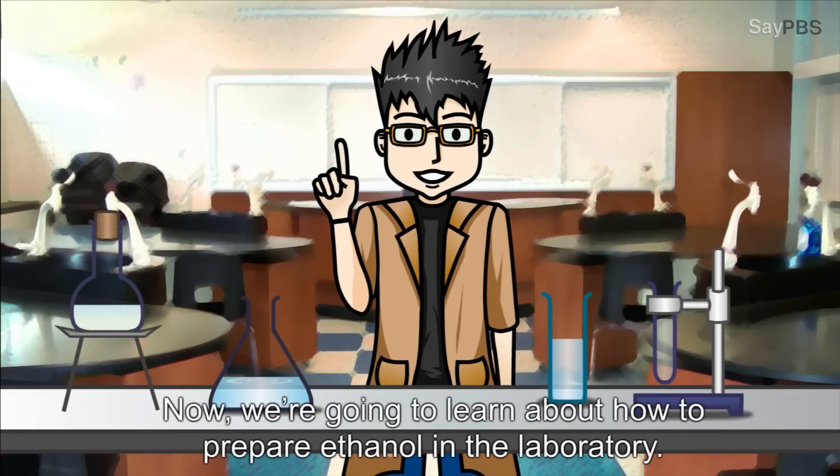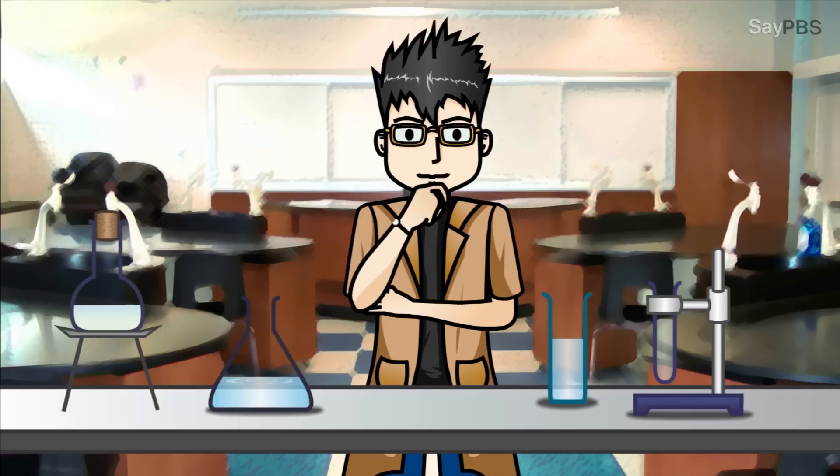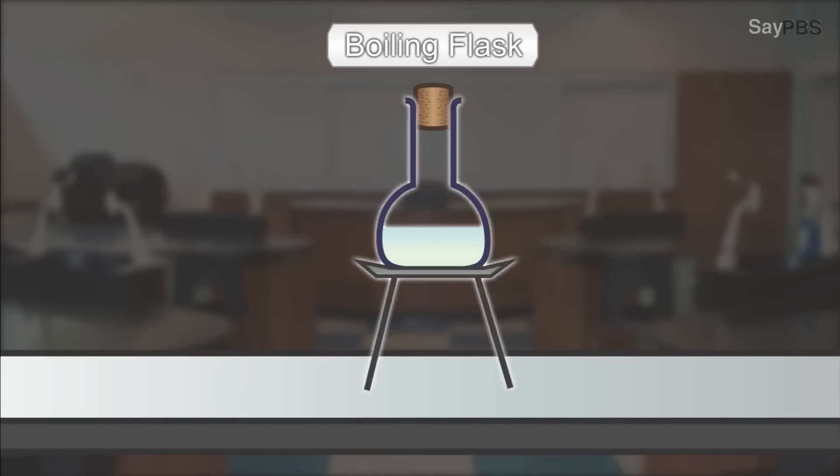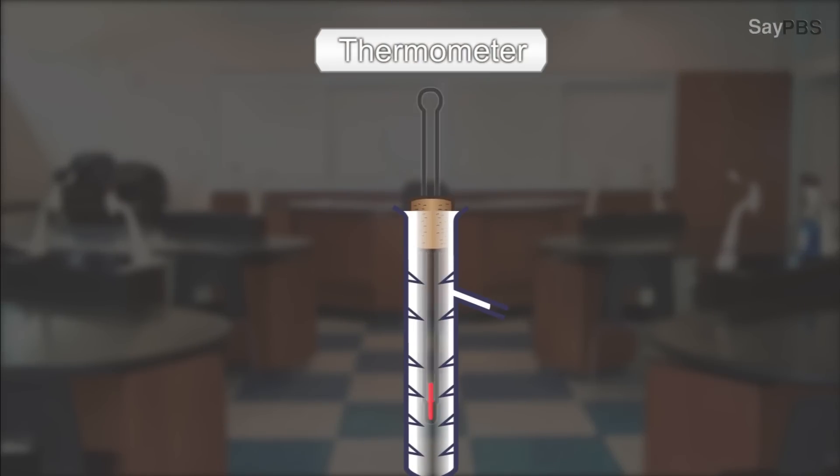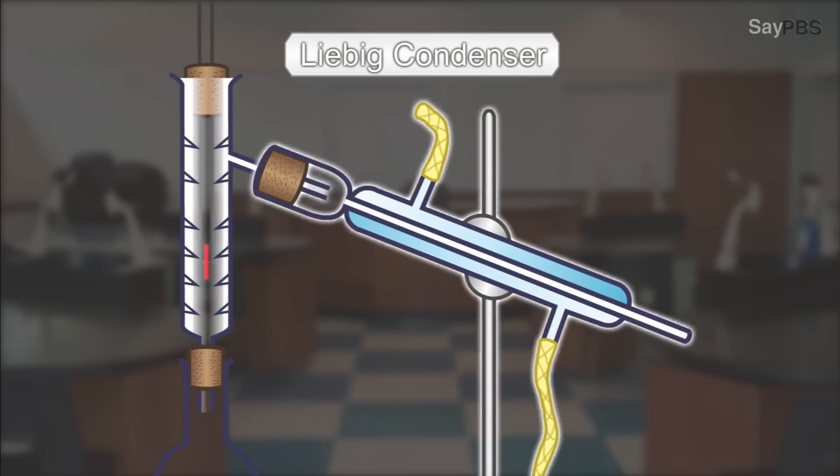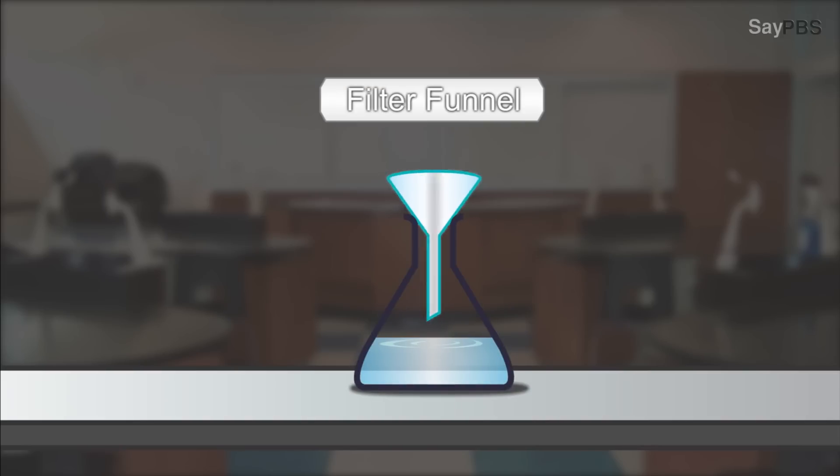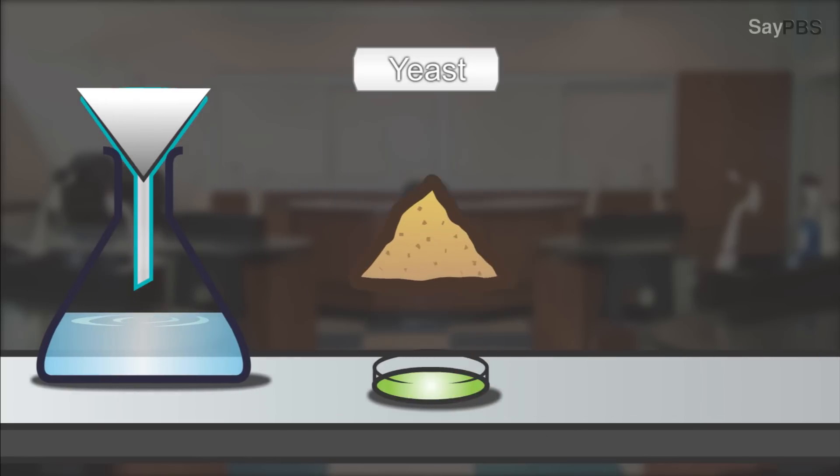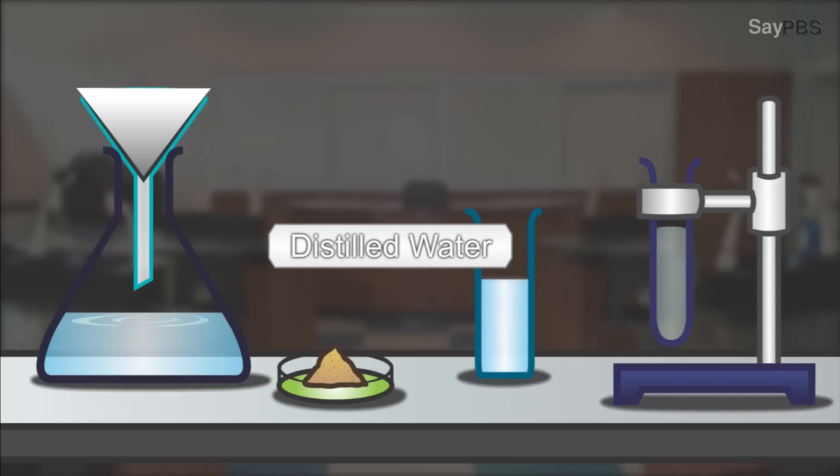Now, we are going to learn about how to prepare ethanol in a laboratory. The apparatus needed for this experiment are boiling flask, rubber stopper, fractional distillation unit, thermometer, Liebig condenser, conical flask, filter funnel, and filter paper. The materials needed are glucose solution, yeast, lime water, and distilled water.